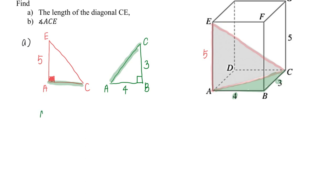First, find AC. AC squared equals 4 squared plus 3 squared by Pythagorean theorem. Square rooting this gives AC = 5.